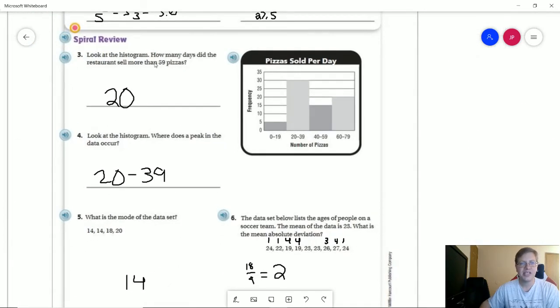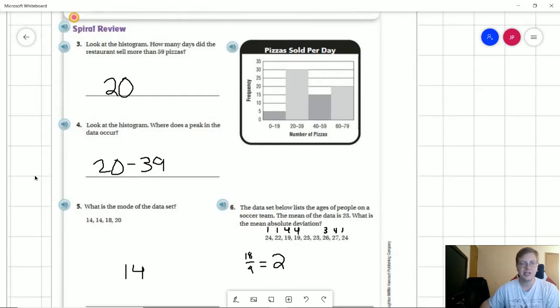For number three, how many days did the restaurant sell more than 59 pizzas? We are looking at this part here, and our frequency would be 20. The peak for number four occurs between 20 and 39 pizzas sold per day.